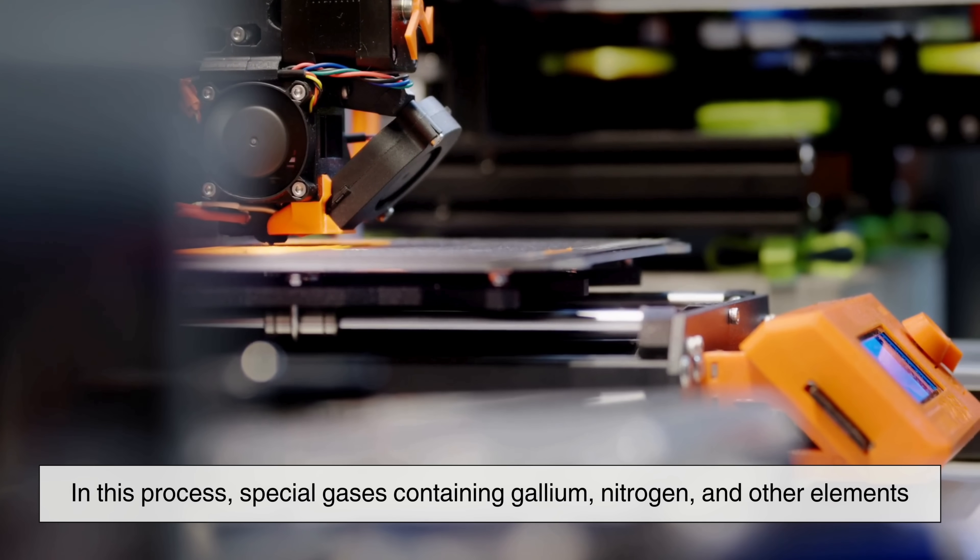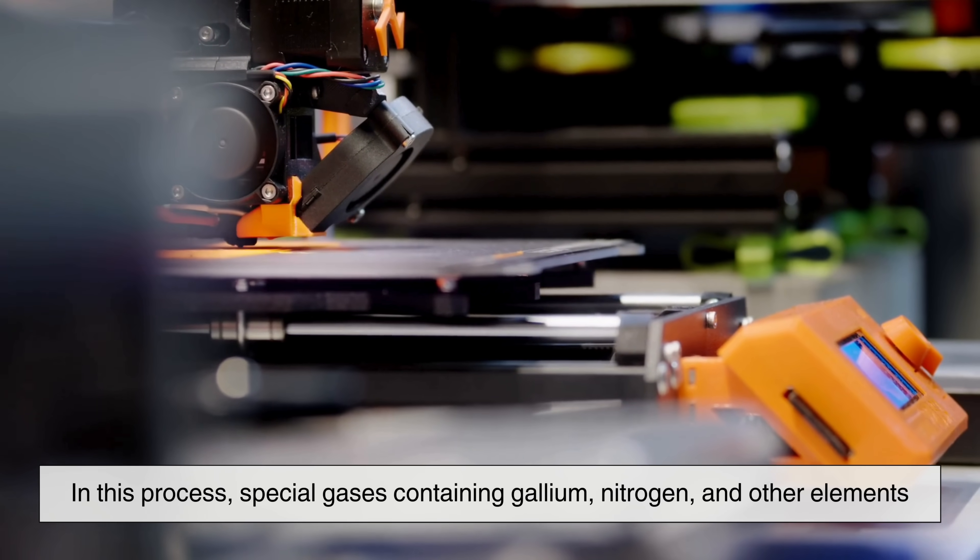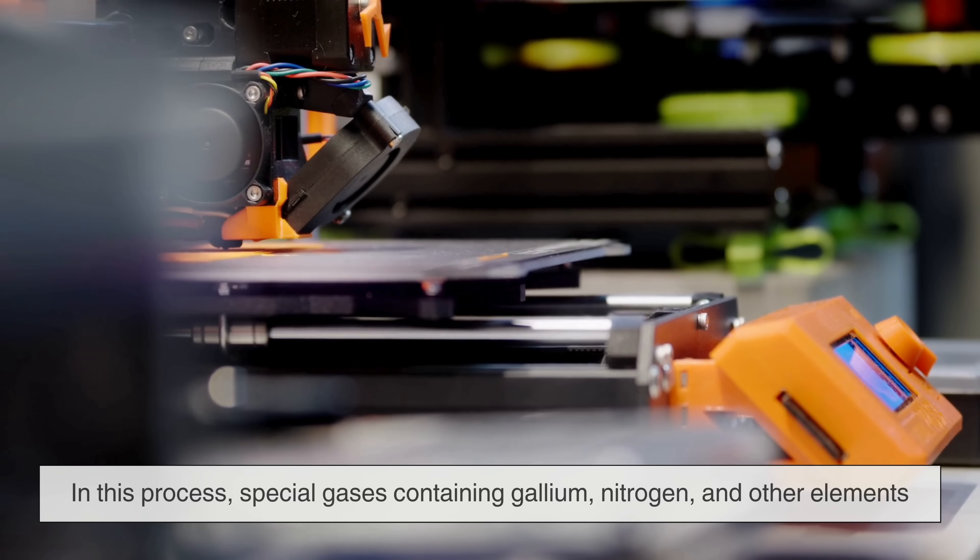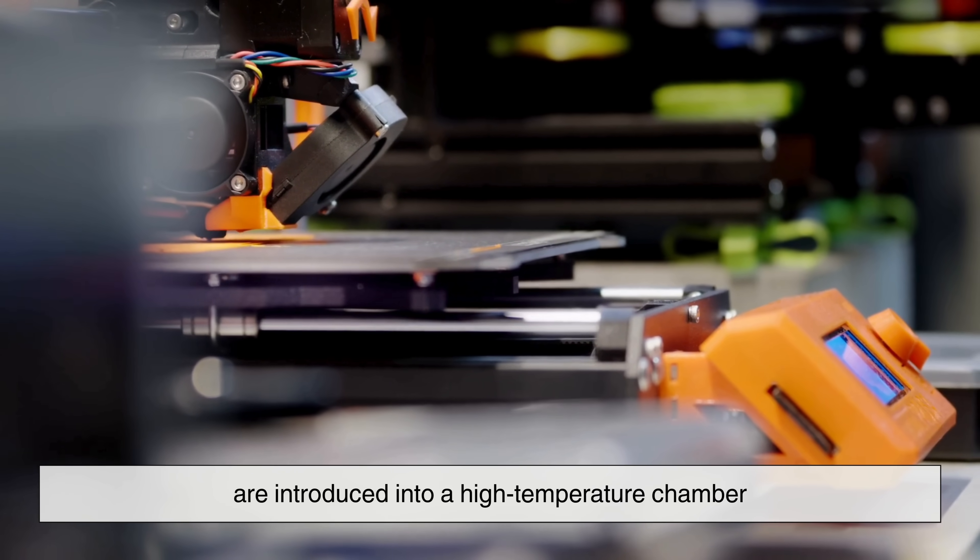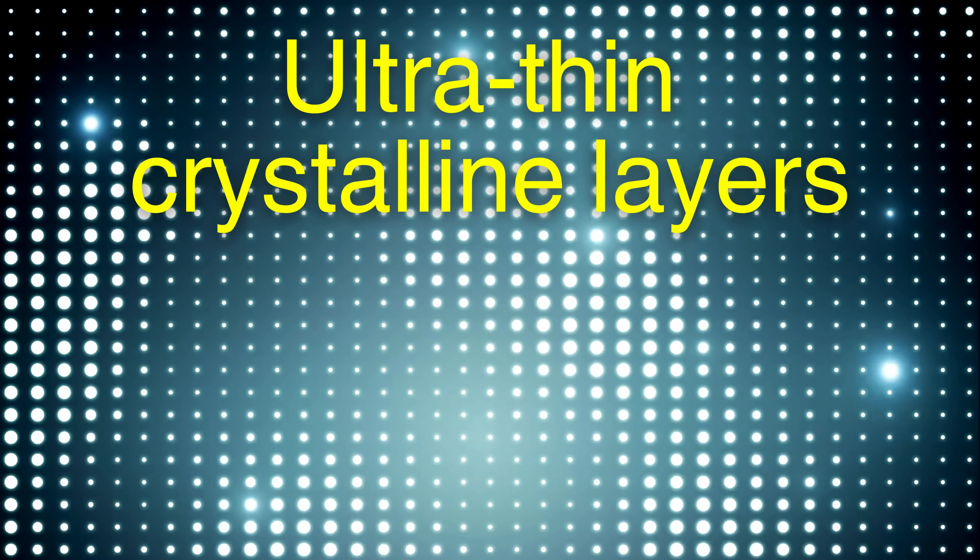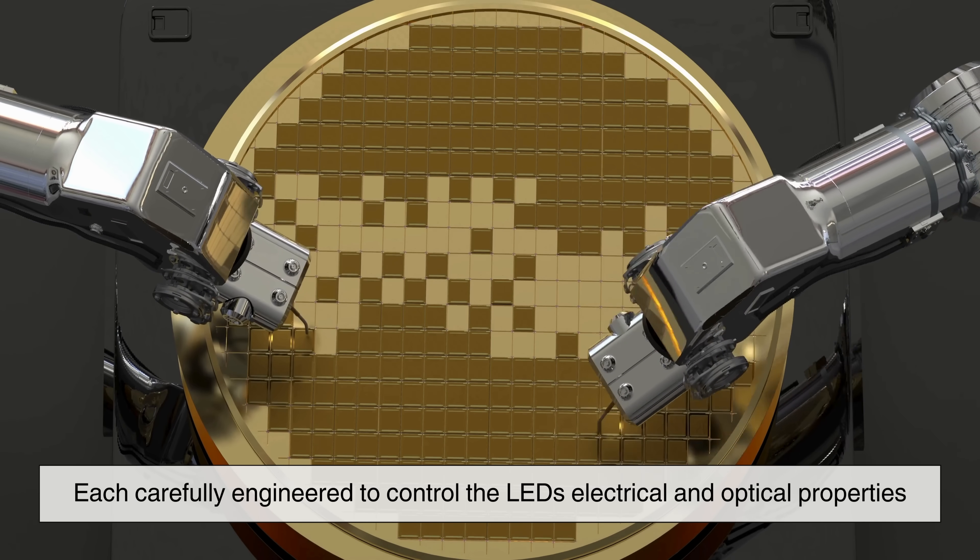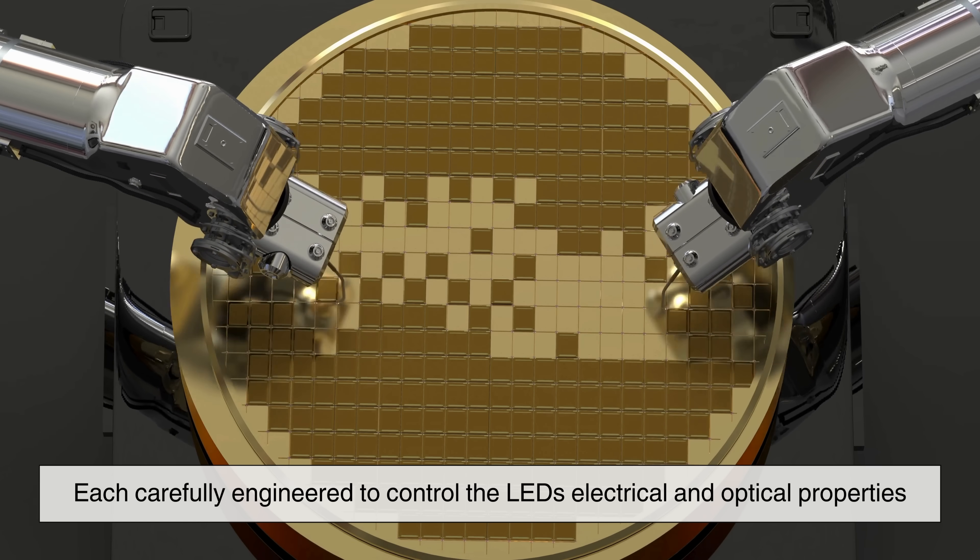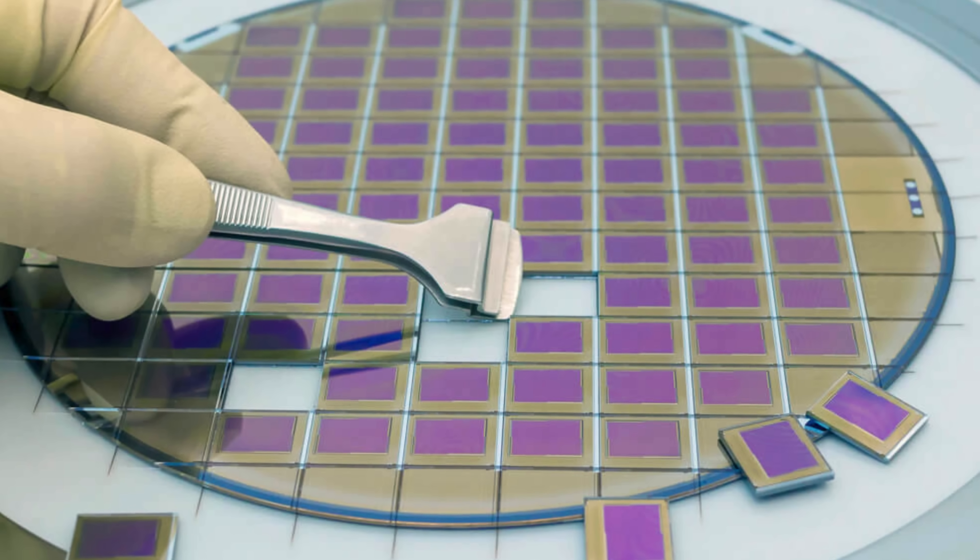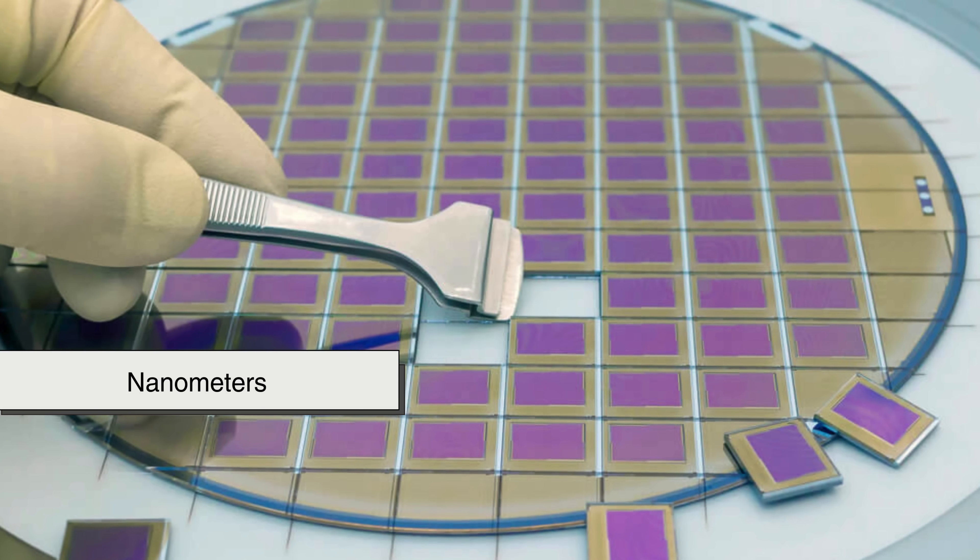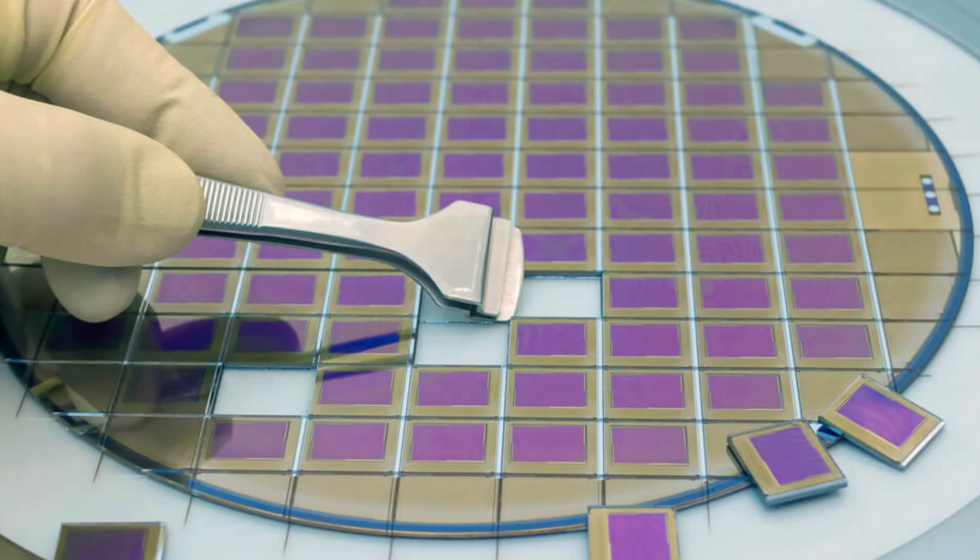In this process, special gases containing gallium, nitrogen and other elements are introduced into a high temperature chamber. These gases react to form ultra-thin crystalline layers on the substrate, each carefully engineered to control the LEDs' electrical and optical properties. The thickness of these layers is measured in nanometers, requiring extreme precision.